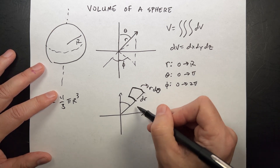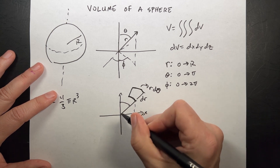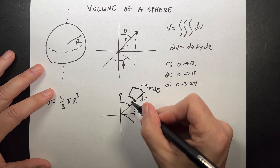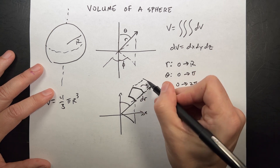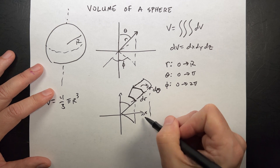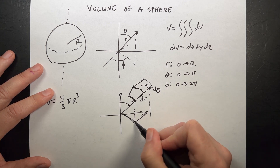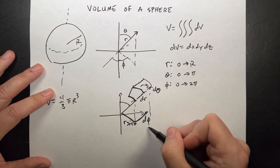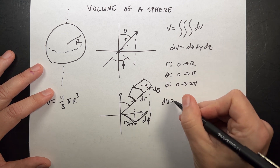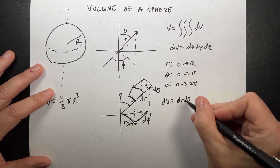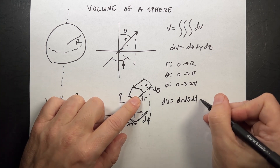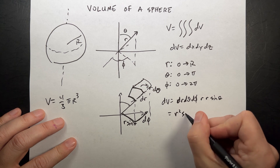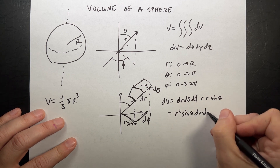Now for the phi direction, I need to project that down. The radius of the circle at angle theta is r sin θ, so moving through an angle dφ gives an arc length of r sin θ dφ. Putting all three dimensions together, the volume element is dV = r² sin θ dr dθ dφ.